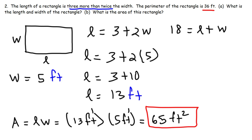So that's it for this video. Now you know how to find the length and width of a rectangle if you're given the perimeter. This only works when you're given a sentence relating the length to the width — without that, you can't solve the problem unless you're also given the area.